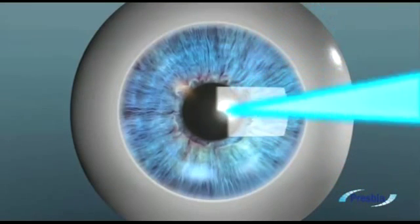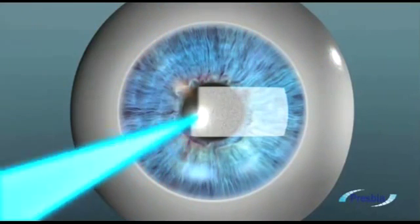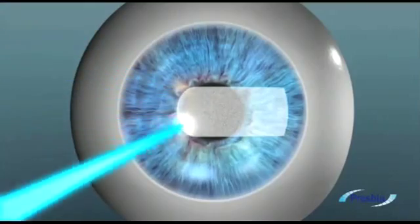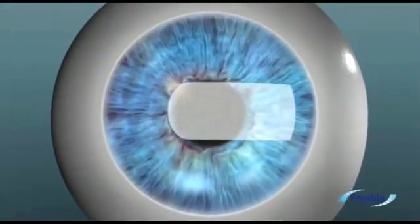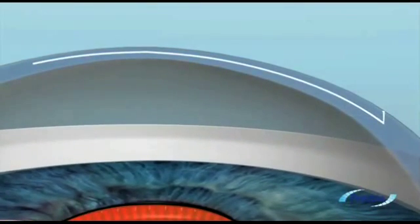The doctor creates a small pocket within the corneal stroma of the non-dominant eye using a femtosecond laser. This middle area of the cornea houses the microlens just above the pupil, and the implanted lens is not visible to the naked eye.